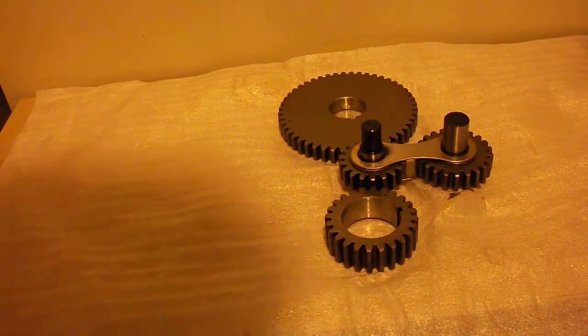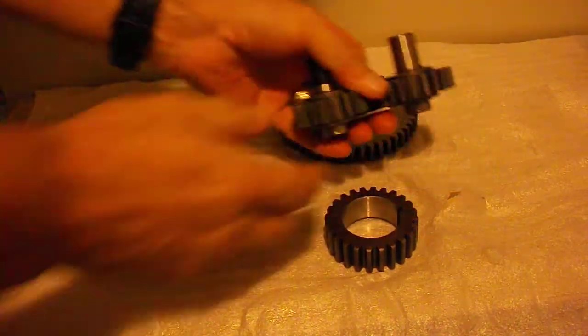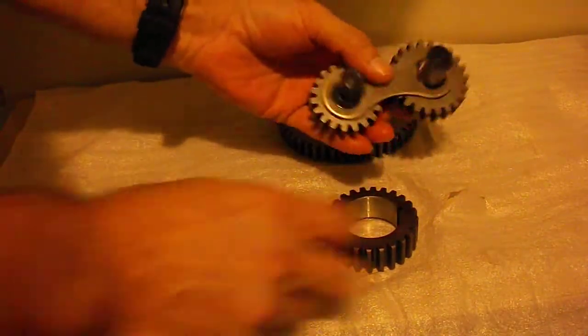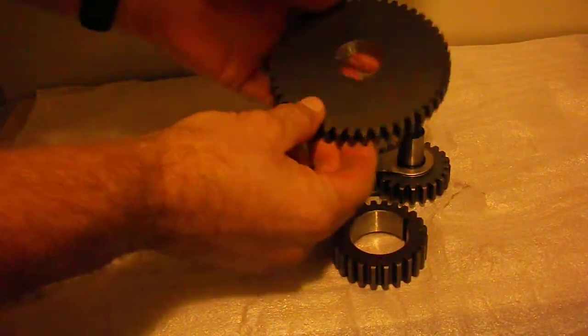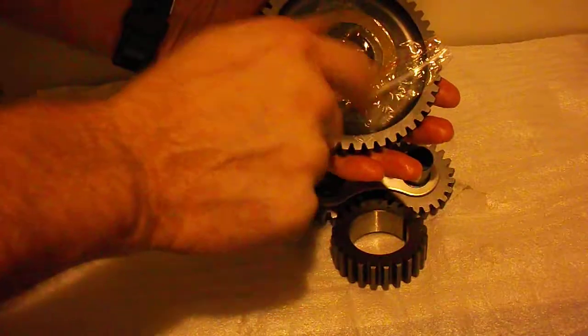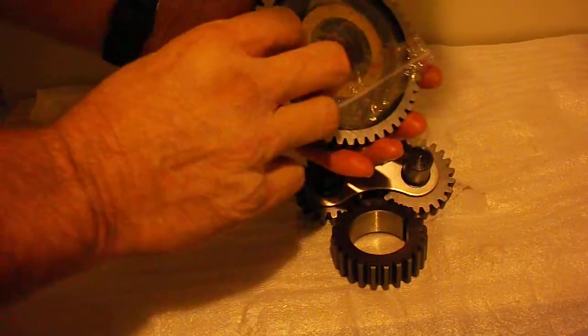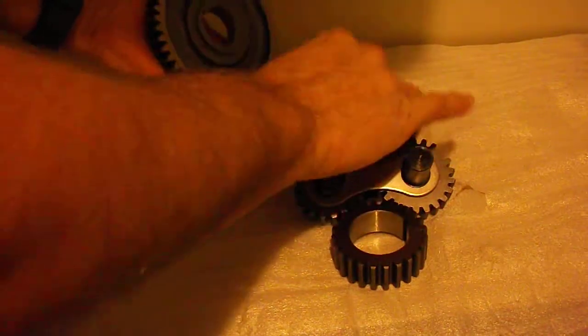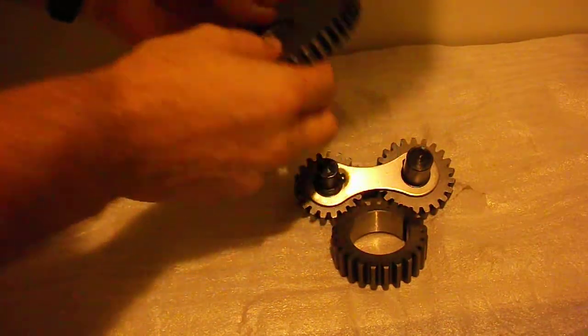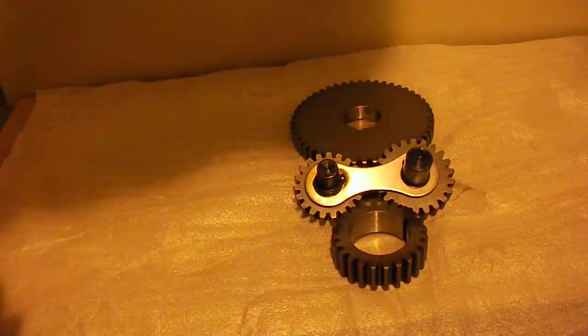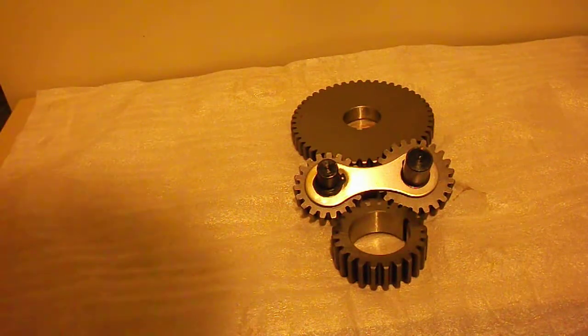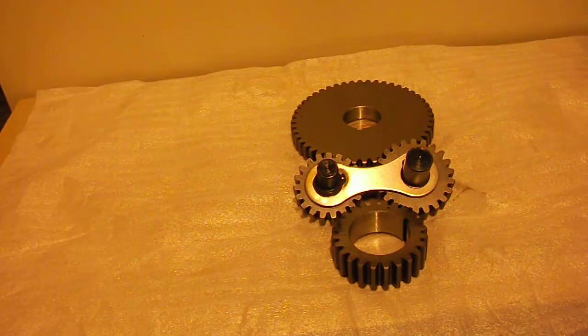So I'll just kind of show you this real quick. Here we've got the idler gear set, here's a crankshaft gear and the camshaft gear. On the camshaft gear, this is in a little bag, you'll remove the bag. There's a bronze bushing and that just installs on the back there.